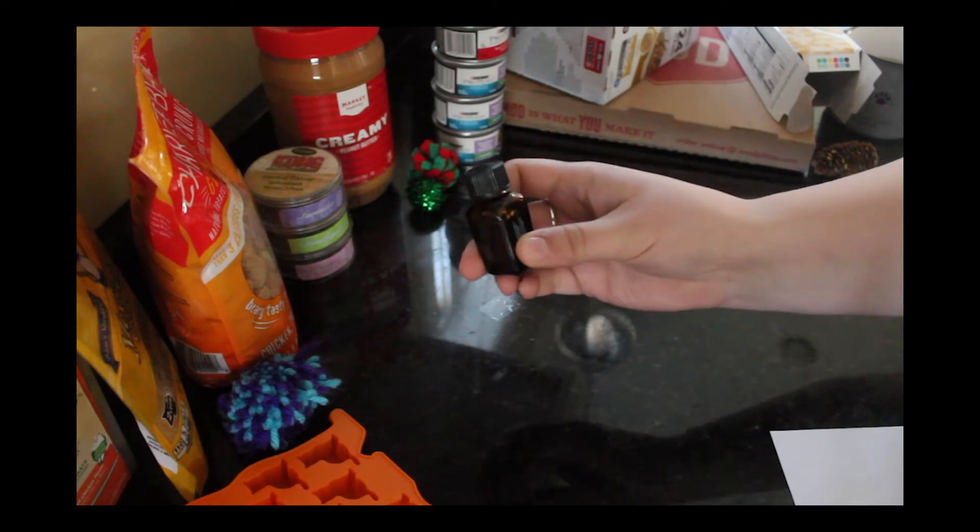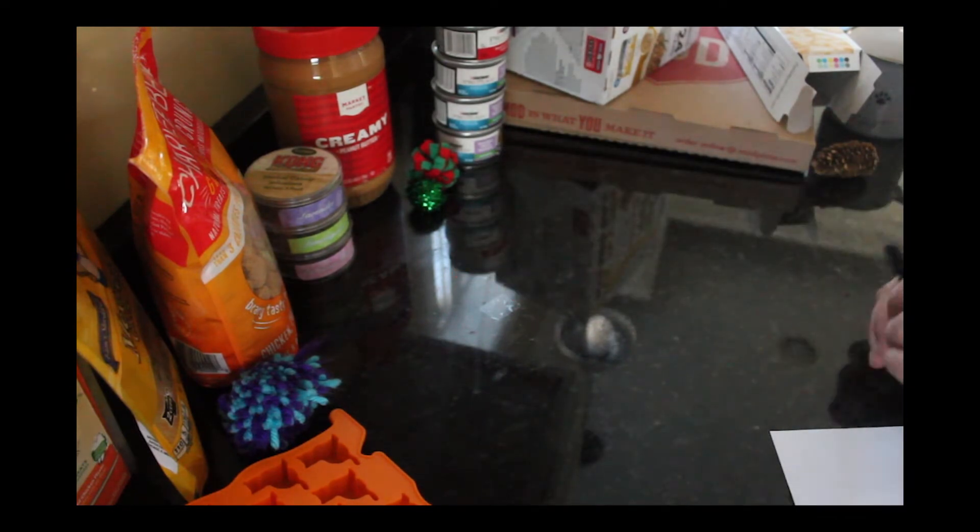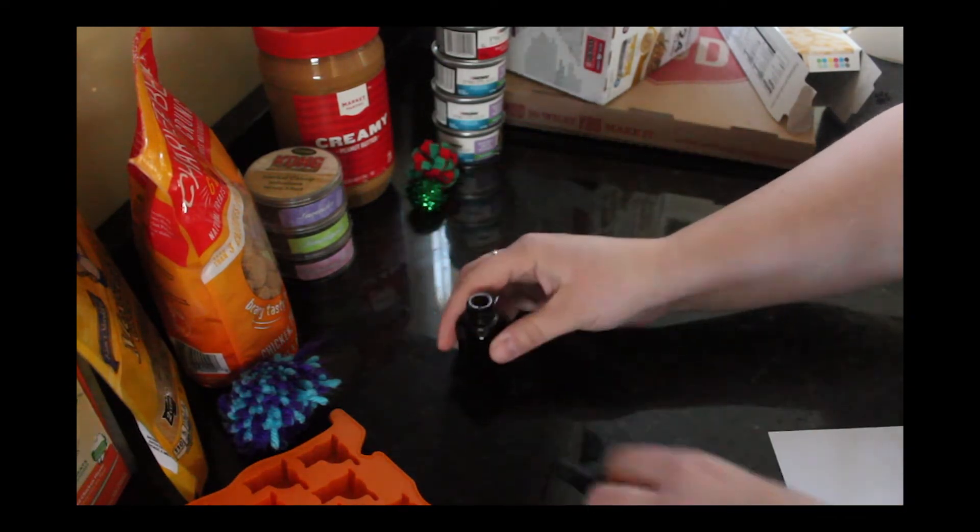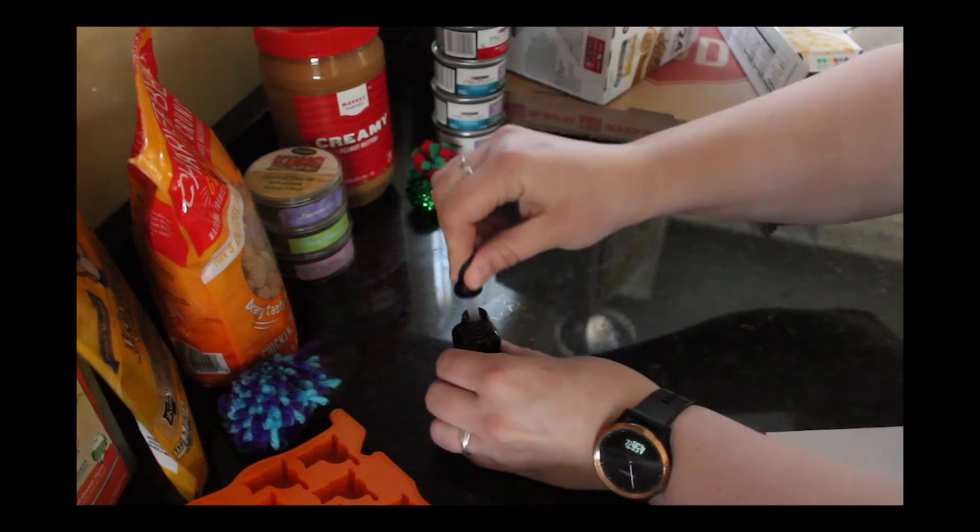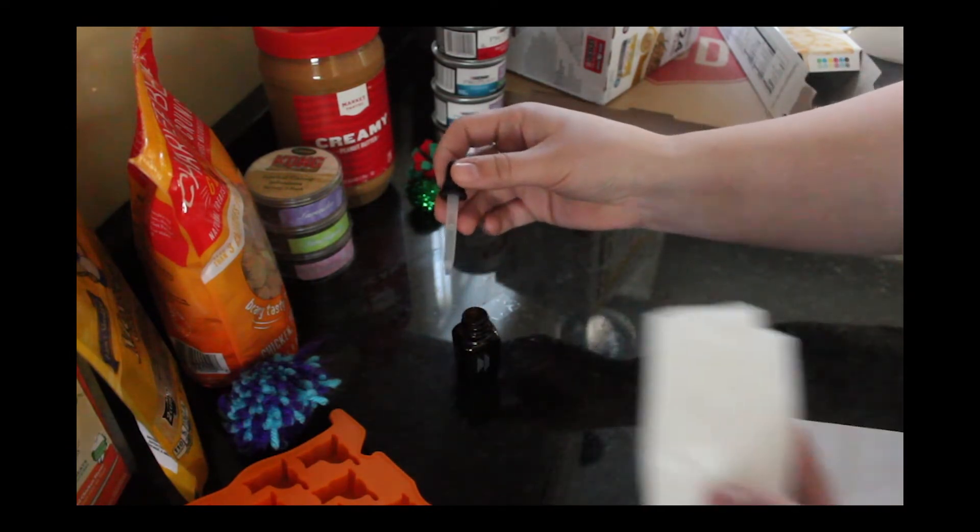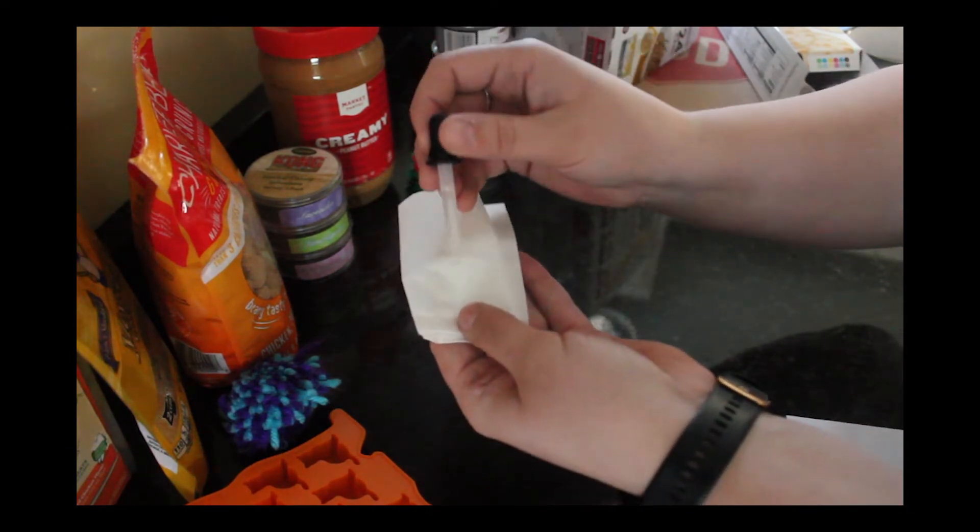First step, you're going to take a single drop of your essential oil. You're going to put just one drop on your rag or your Kleenex.